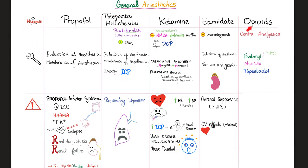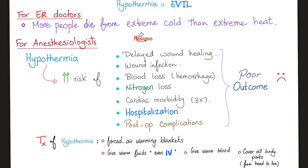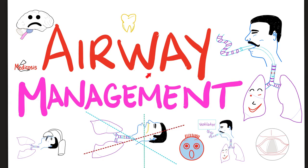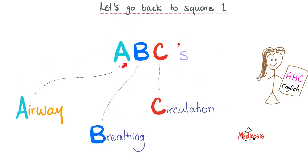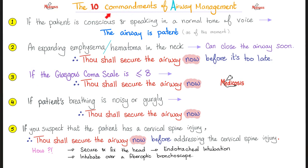A quick discussion on general anesthetics: don't forget propofol infusion syndrome. Hypothermia is nasty and dangerous. Malignant hyperthermia, which happens with succinylcholine, is bad too. After giving the patient the general anesthetic and neuromuscular blocker, you must manage the airway — airway comes first, it's all about your ABCs. We discussed the 10 commandments of airway management. Don't forget that obesity complicates things. Prepare a plan B before managing the airway.